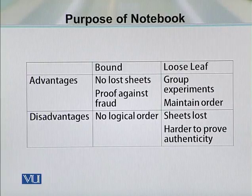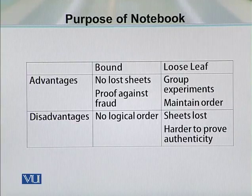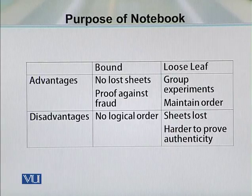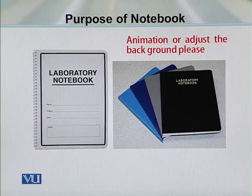The other option is loose leaves. When you use loose leaves, there is always a chance to lose the sheets and lose your key results. The advantage is that you can group different types of experiments and group the results. But because of the risk of losing results, this kind of notebook is not normally preferred in industrial or research facilities.